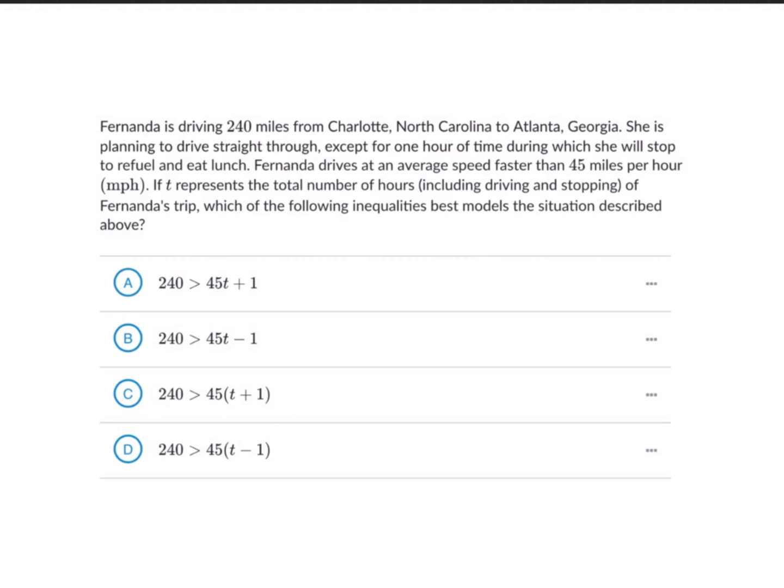Fernanda is driving 240 miles from Charlotte, North Carolina to Atlanta, Georgia. She's planning to drive straight through, except for one hour during which she will stop to refuel and eat lunch. Fernanda drives at an average speed faster than 45 miles per hour. T represents the total number of hours, including driving and stopping. This involves distance, rate, and time — reminding us of the famous equation: distance = rate × time. If the rate is miles per hour and we multiply by hours spent driving, we get total distance covered.